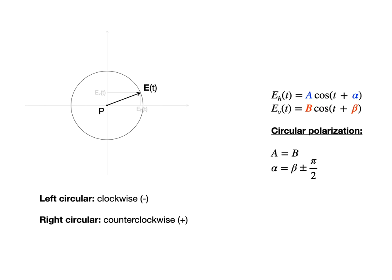There are two possibilities: left and right circular polarizations. Left circular polarization means that the electric field vector E is rotating clockwise, which is achieved if alpha equals beta minus 90 degrees.